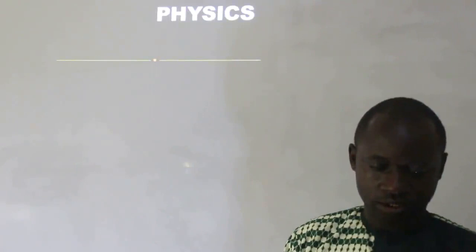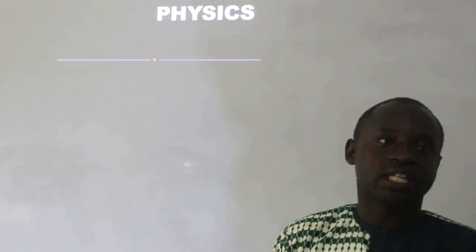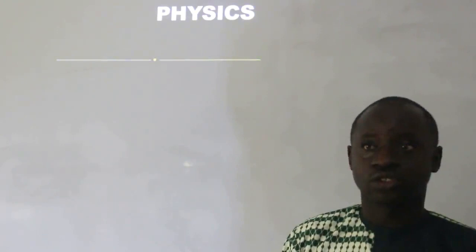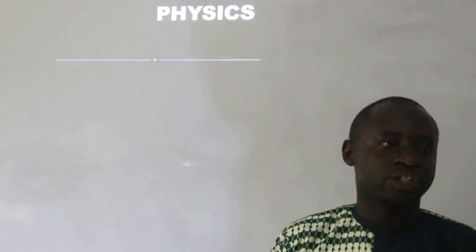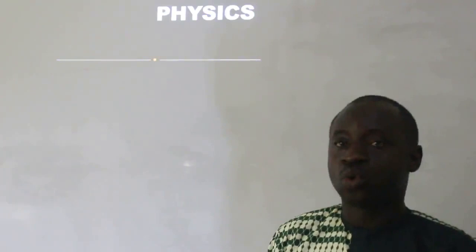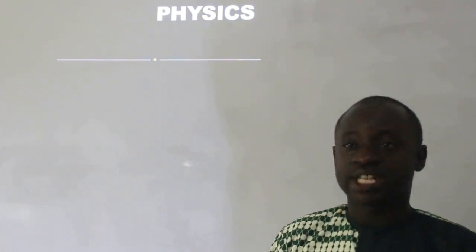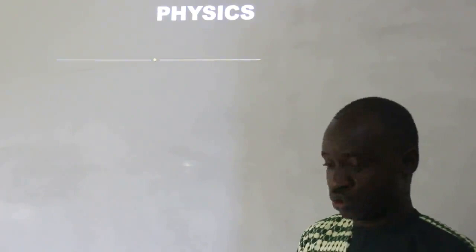Good day everyone. I believe you are doing well at your homes. In our last class we were discussing energy quantization. Energy quantization refers to that fixed amount of energy that is emitted when an electron jumps from an excited state to a ground state — a photon of energy is always emitted. That process is what we call energy quantization.